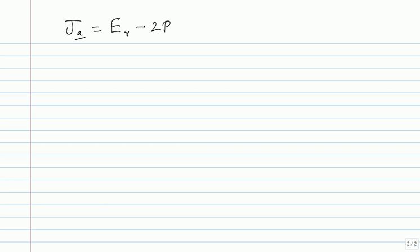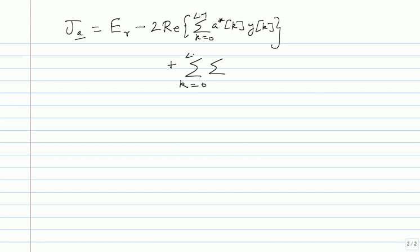For the first step I'll try to simplify the computations in J(a). I wrote J(a) as: e_r minus 2 times the real part of summation k equals 0 to l minus 1 of a*_k times y_k, plus a double summation k equals 0 to l minus 1, j equals 0 to l minus 1, of a_k times rho_h(j minus k).